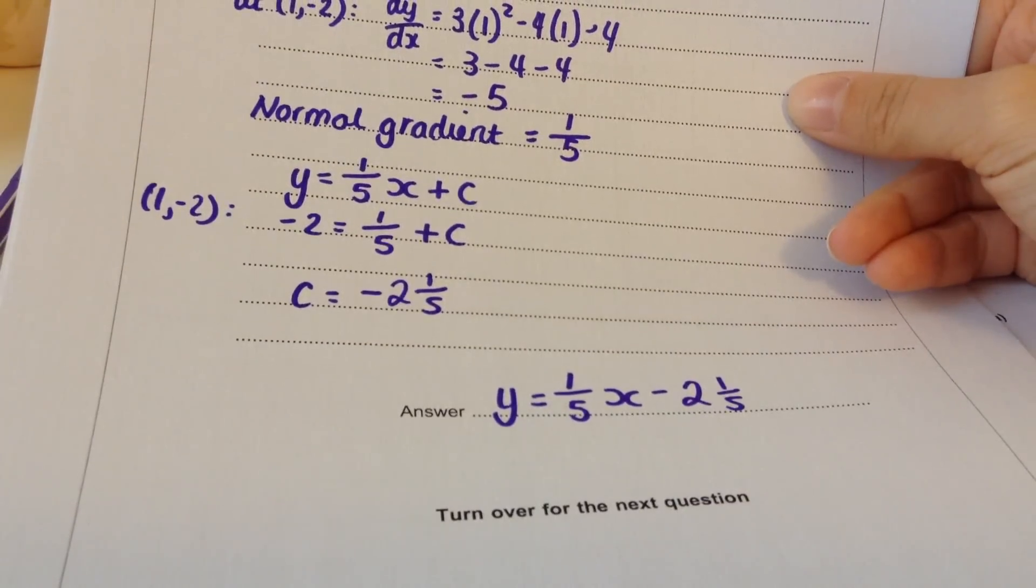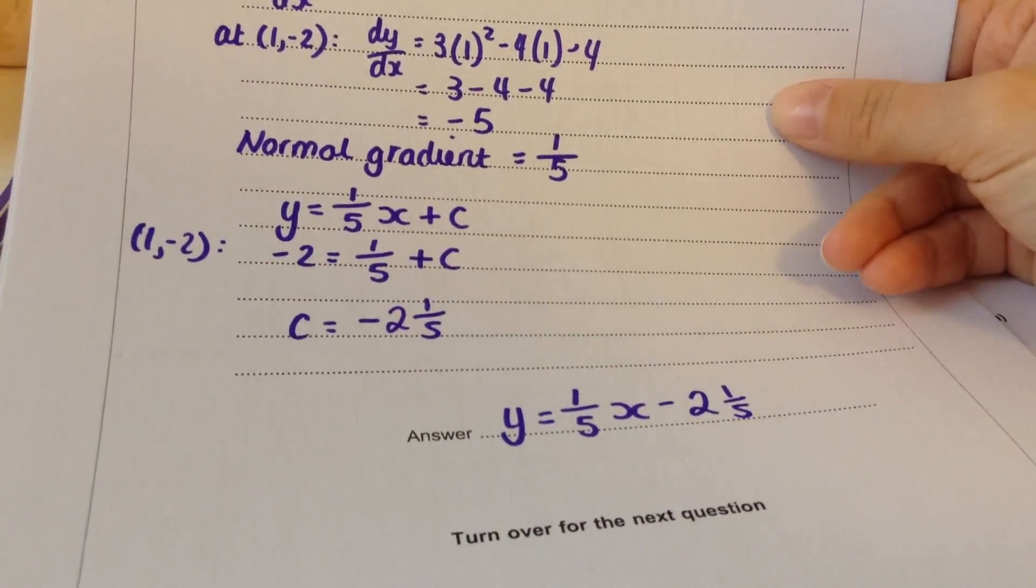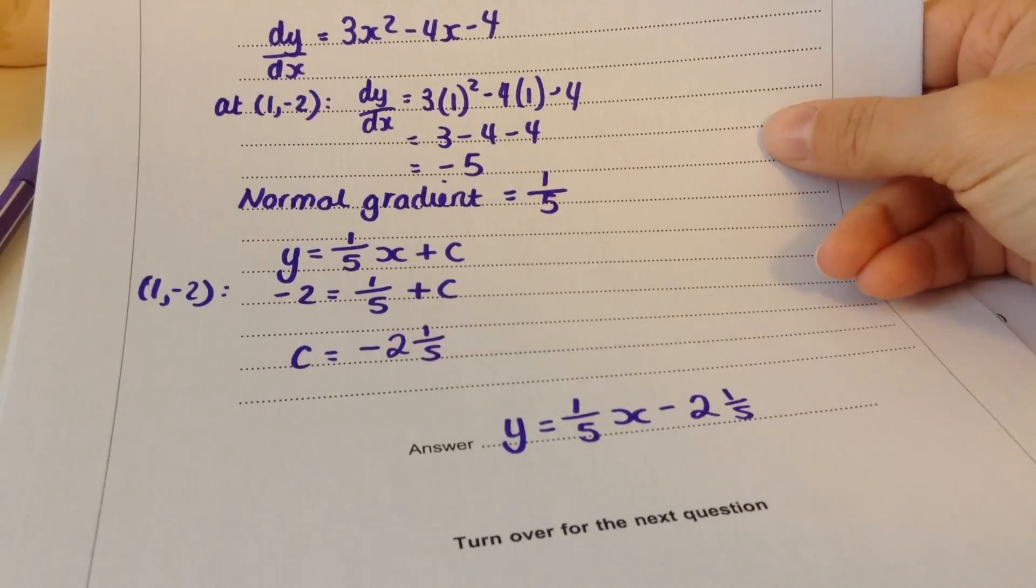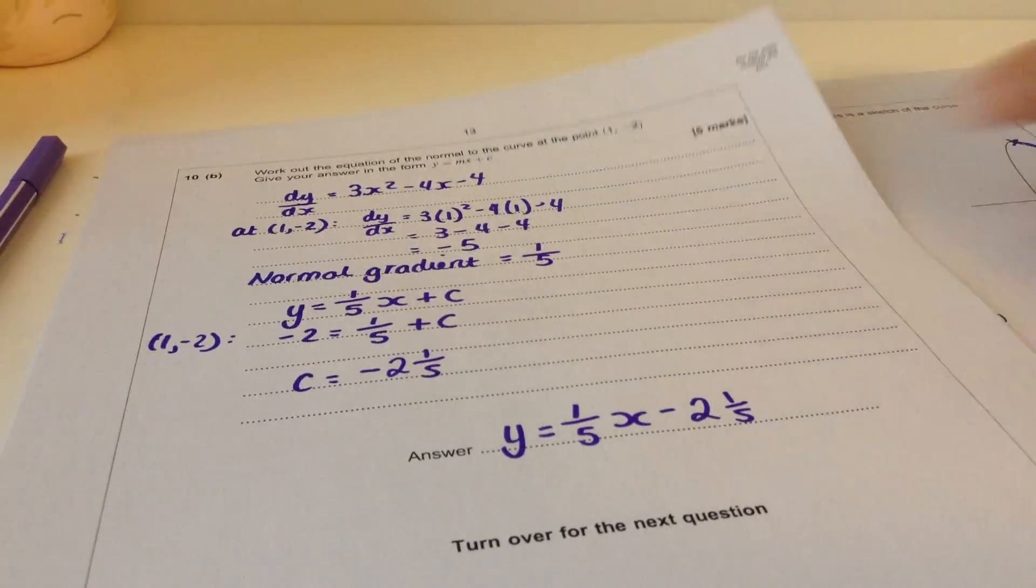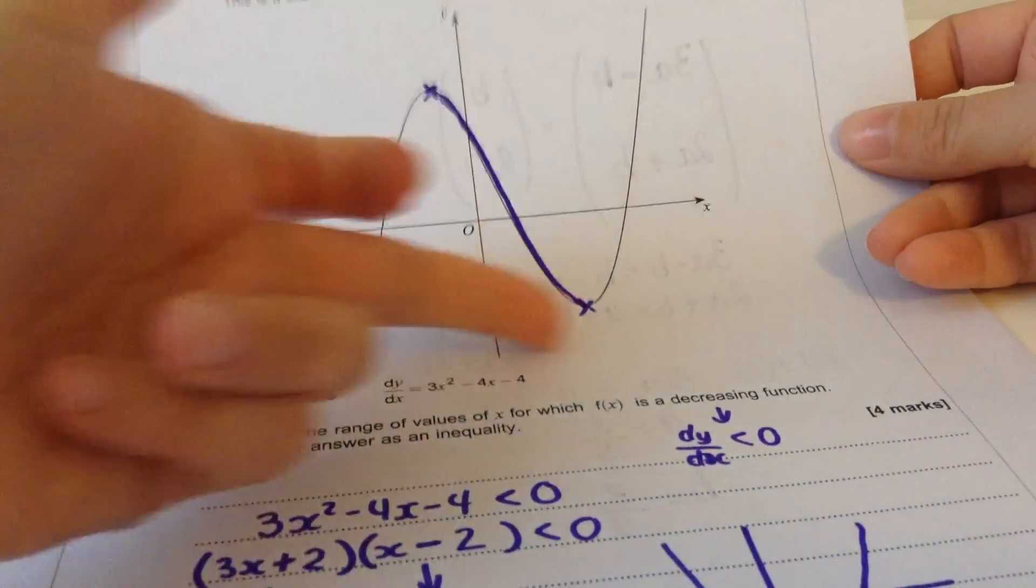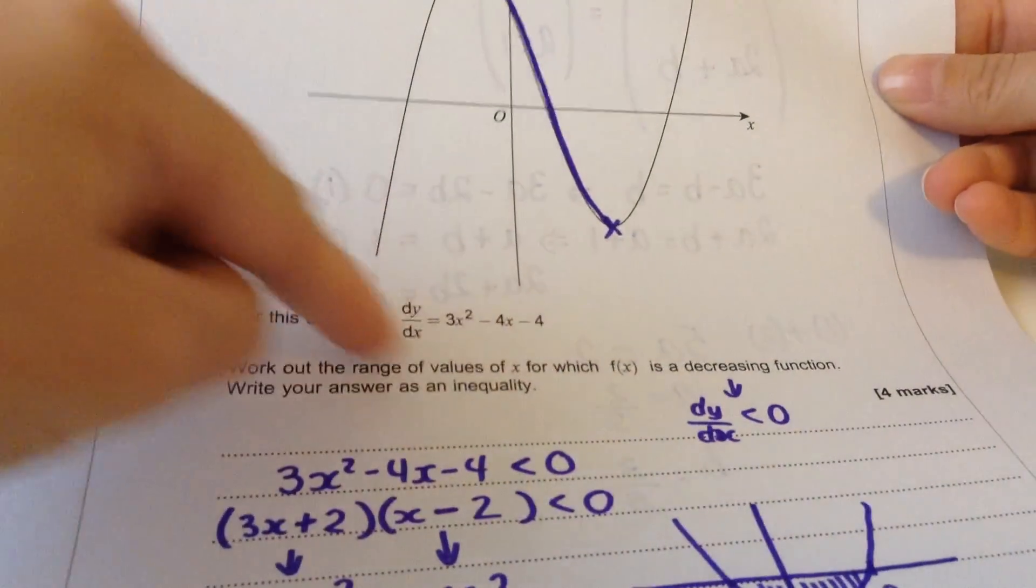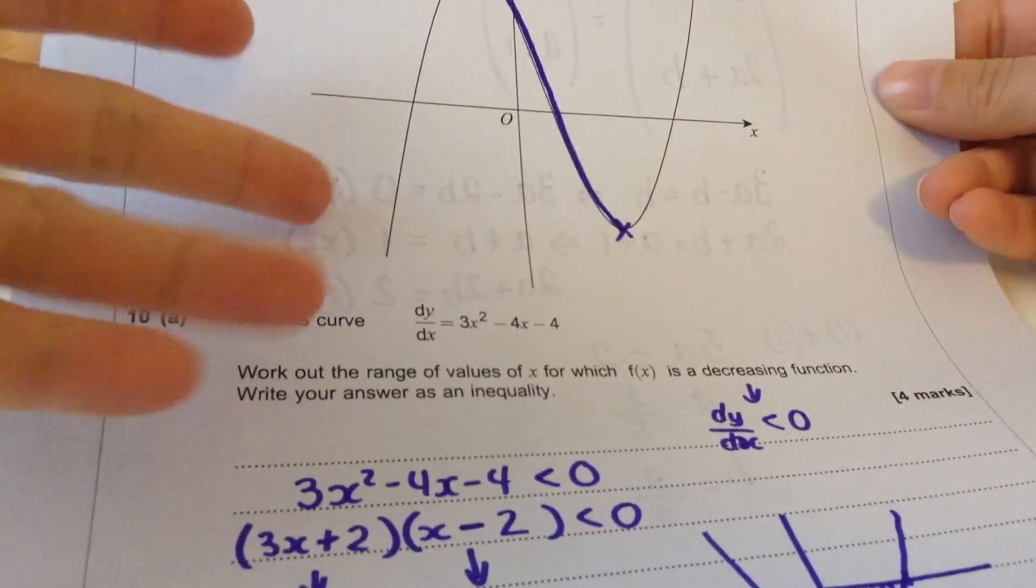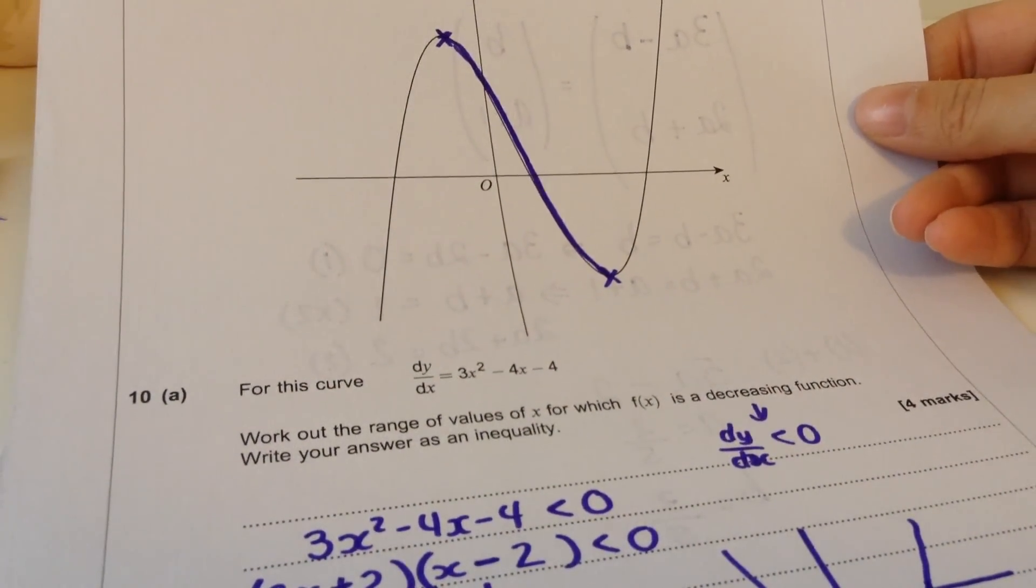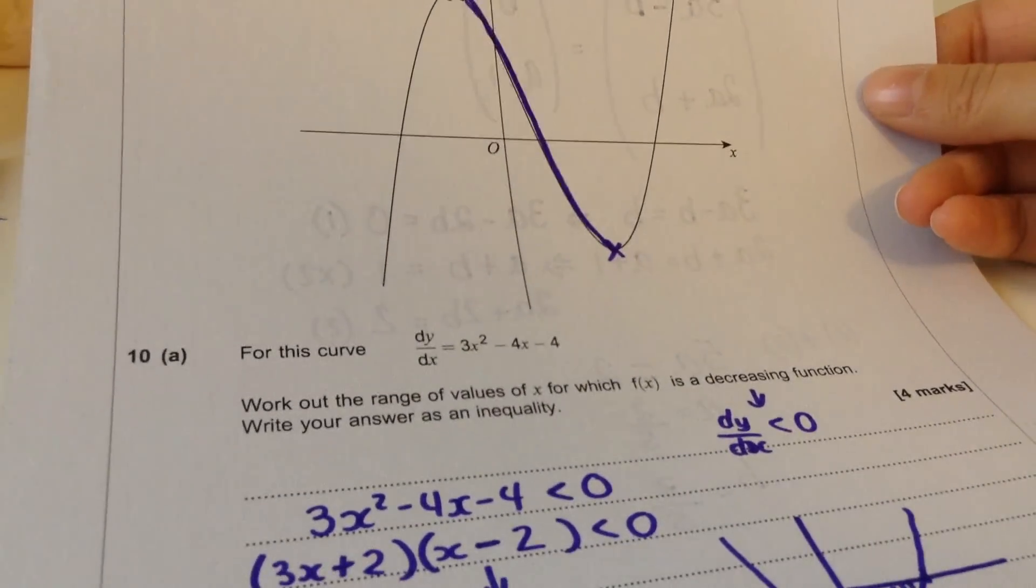Let me see what the examiner's report says. Question 10. In part A, many students did not appreciate that they were given the expression for the gradient of the curve. A lot of people didn't realize that they already differentiated it for you, so they differentiated it again. Equating to zero to find the two x values of the turning points was required.